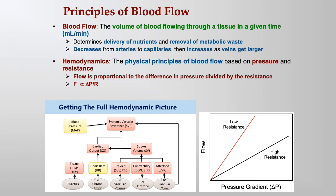The difference in pressure between point A and point B, divided by resistance, gives a measure of flow. The easy thing to remember is that blood always moves from high pressure to low pressure — just like water in your pipes, it always moves from where the pressure is high to where the pressure is low.